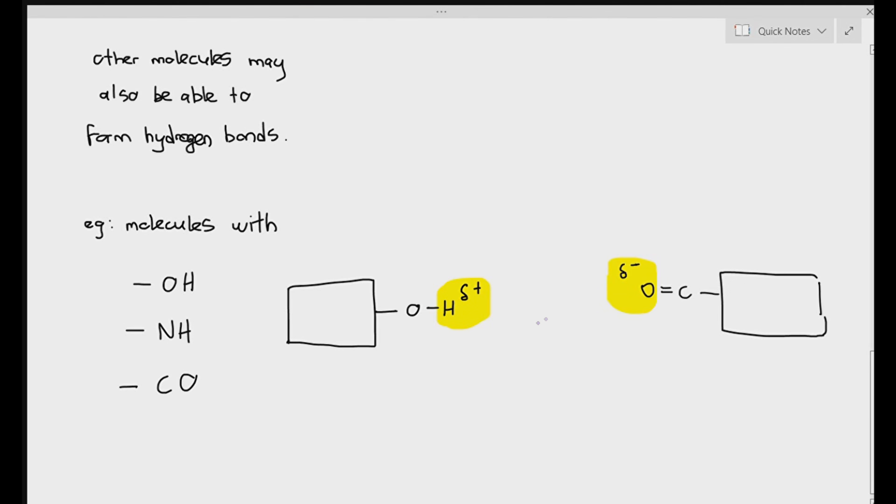For example, if I were to just take a molecule with an OH group and another molecule with the CO group, you can see that the hydrogen end, which is partially positive, can form a hydrogen bond with the oxygen end, which is partially negative. That's basically it.